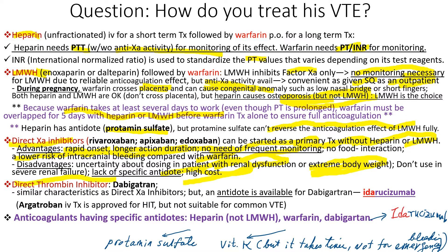Direct thrombin inhibitor dabigatran has similar characteristics to direct factor 10a inhibitors, but unlike factor 10a inhibitors, an antidote is available — its name is idarucizumab. Think of 'Ida' from the opera. Argatroban is a direct thrombin inhibitor used for heparin-induced thrombocytopenia. In summary, anticoagulants with specific antidotes: heparin — protamine sulfate (not low molecular weight heparin); warfarin — vitamin K. In emergencies with active bleeding, you cannot use vitamin K because it takes several hours to work, so use fresh frozen plasma or prothrombin concentrate. Dabigatran — idarucizumab.